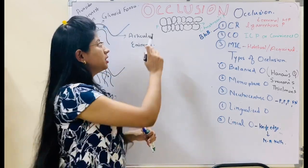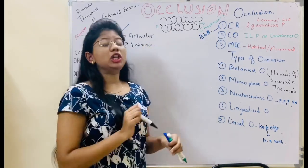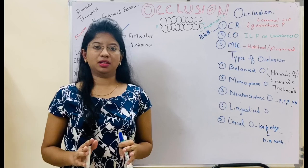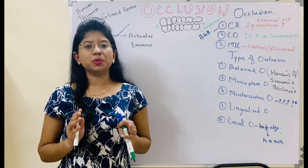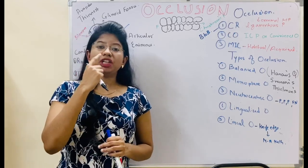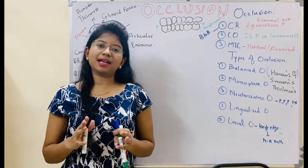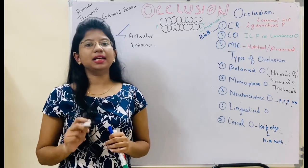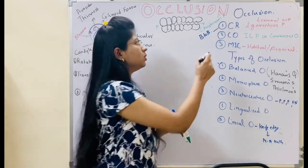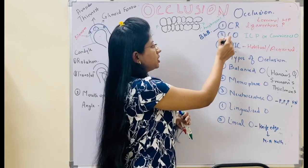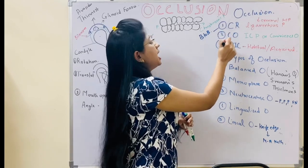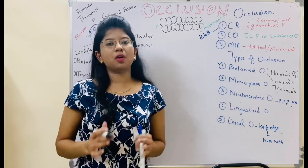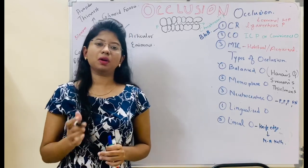Let's begin. Occlude means to close according to the dictionary. We are going to learn about occlusion, that is the relationship between maxillary and mandibular teeth. To understand occlusion clearly, we need to know about centric relation, centric occlusion and maximum intercuspation. We are going to see these terms to understand occlusion.